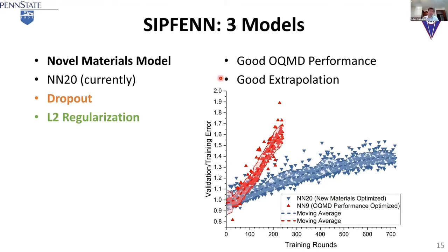Once you implement these two methods, this comparison shows the validation-to-training error ratio between the OQMD-optimized network and the novel materials-optimized network. The higher you go, the better you are predicting what you've seen, but the worse you are at predicting what you haven't seen. The OQMD-optimized network performs better when shown structures it has seen before, but when predicting something new, the novel materials-optimized network will be much better.